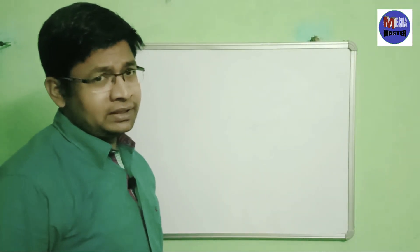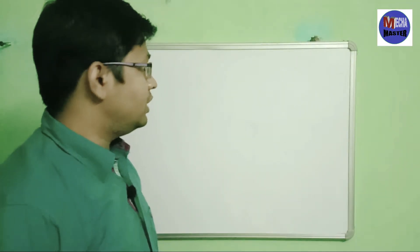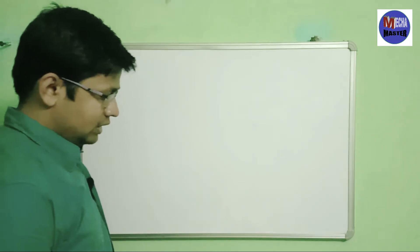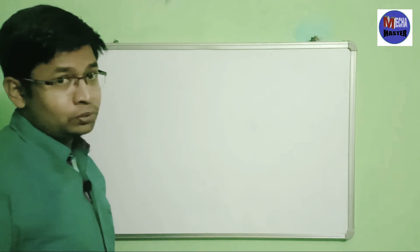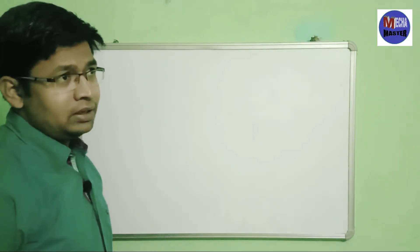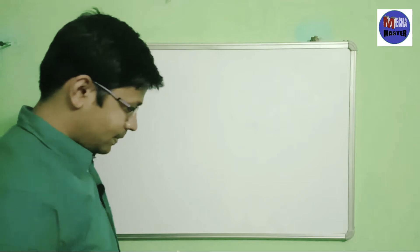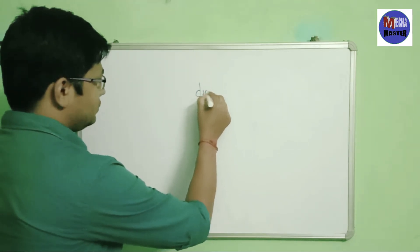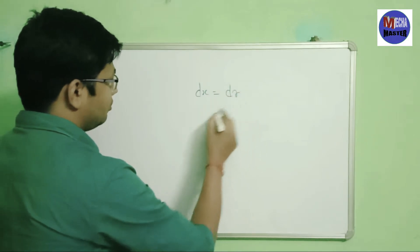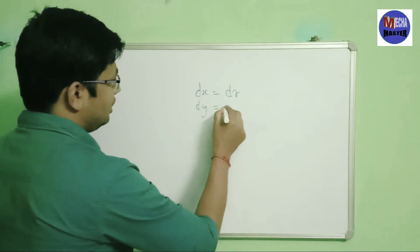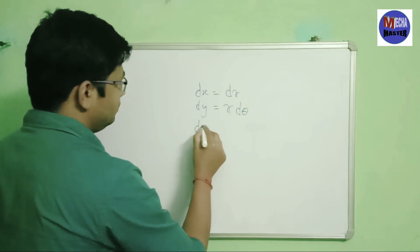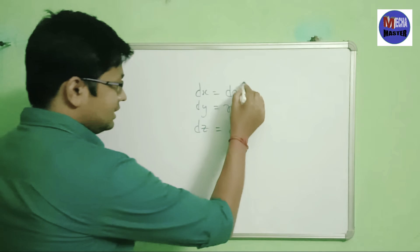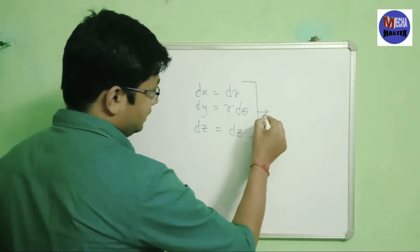In this video I will tell you a trick regarding fluid mechanics where you change the Cartesian coordinate into polar coordinate. For this you have to go through the Jacobian. The trick is: first write dx equals to dr, dy equals to r dθ, and dz equals to dz. This is basically a cylindrical coordinate system.